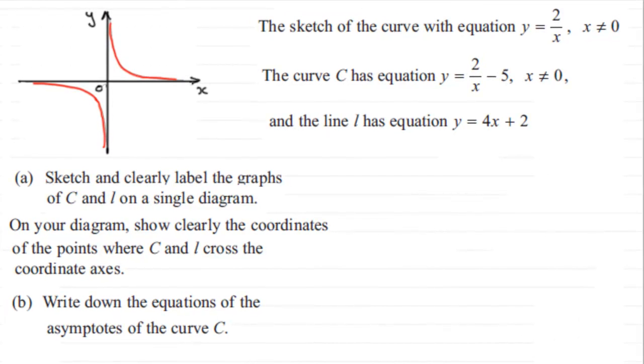Hi. Now what I've got here is an example on sketching graphs based on transformations. We've got this sketch of the curve with equation y equals 2 over x, where x doesn't equal 0. The curve C has equation y equals 2 over x minus 5, where x is not equal to 0, and the line L has equation y equals 4x plus 2.